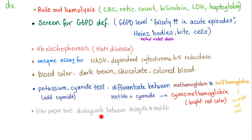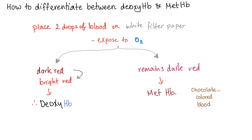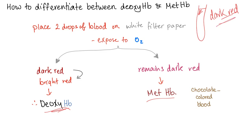The filter paper test distinguishes between deoxyhemoglobin and methemoglobin. You draw blood from the patient and it looks dark red — it could be deoxyhemoglobin or methemoglobin. Venous blood is darker than arterial blood because oxyhemoglobin is less and deoxyhemoglobin is more in the vein than in the artery.